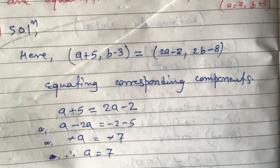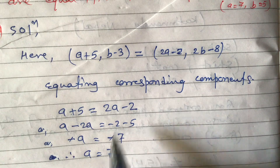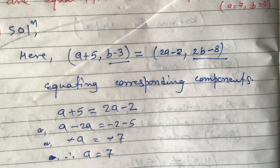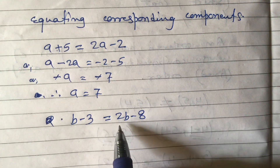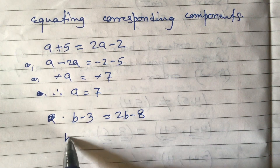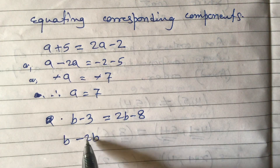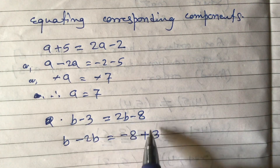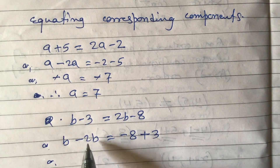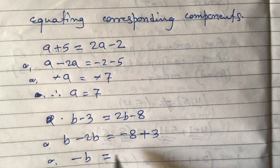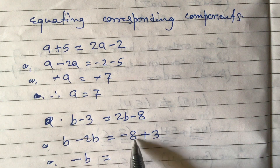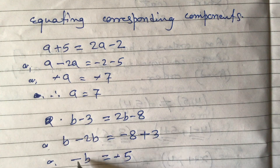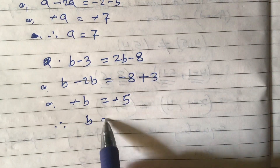Similarly, equating the second components: b-3 equals 2b-8. Transposing like terms, b minus 2b equals minus 8 plus 3, so minus b equals minus 5. The signs are different so we subtract: 8 minus 3 is 5, and the bigger number has a minus sign, so minus b equals minus 5. Therefore b equals 5.